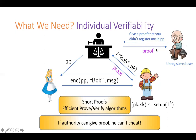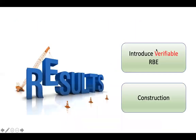Certainly the proofs have to be short and all the proving and verifying algorithms have to be efficient. The security guarantees that if the authority can give a proof, then he can't cheat. In this paper, we introduce this notion of verifiable RBE — this is just regular registration-based encryption with this additional feature called individual verifiability. We then construct it from standard assumptions.